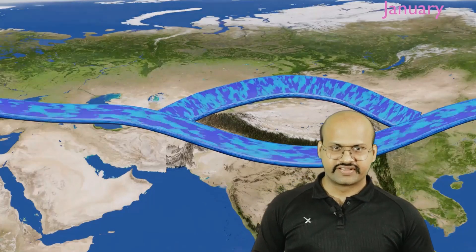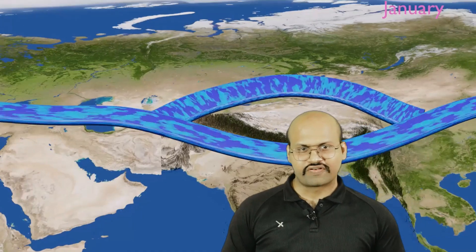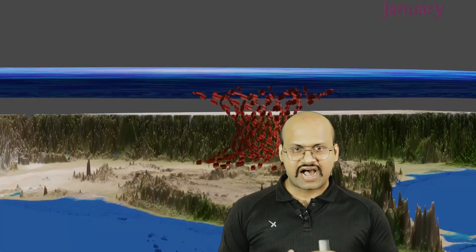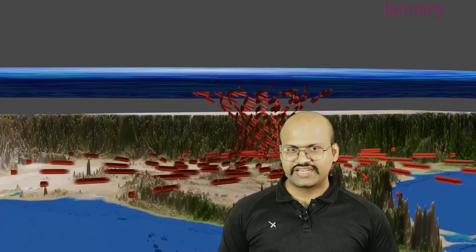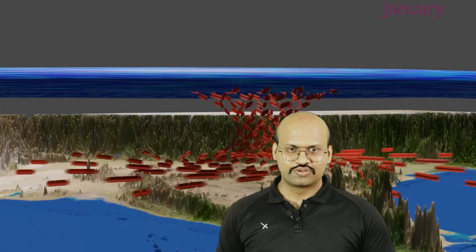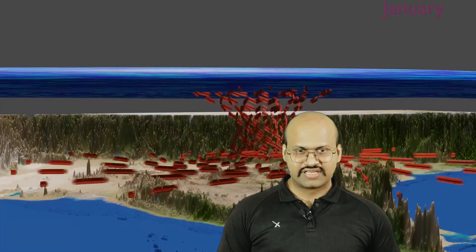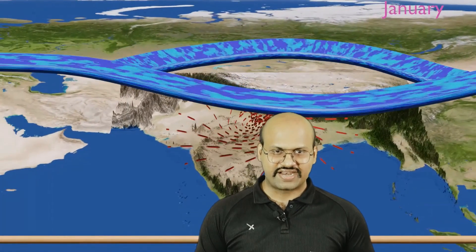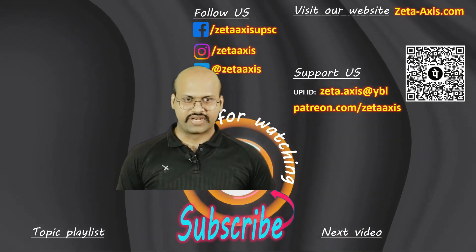When you study the monsoon of India, you will see that the lower limb of the jet stream lies over India, which creates a high pressure region over the Indian subcontinent. Thus we do not get monsoon until this jet stream moves away from our Indian subcontinent. This understanding of jet streams will allow you to understand many climatic phenomena.